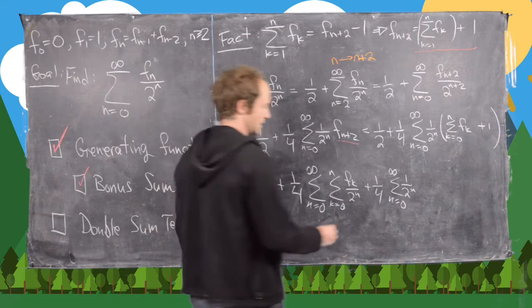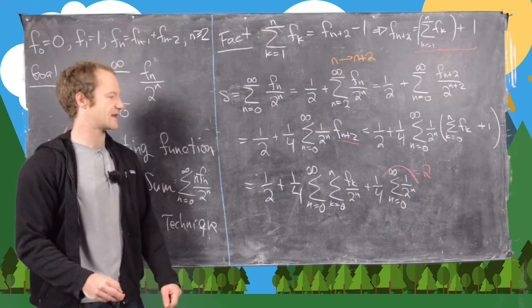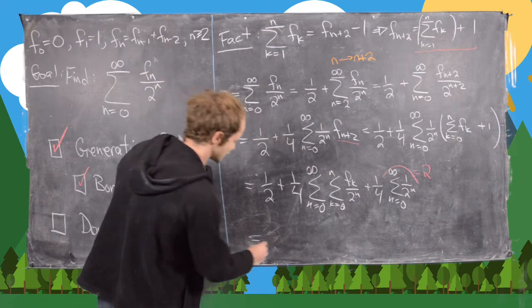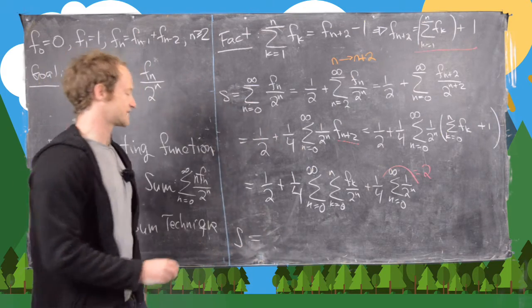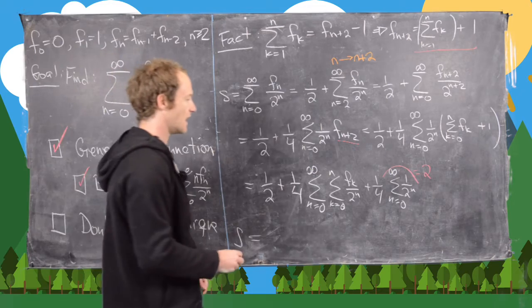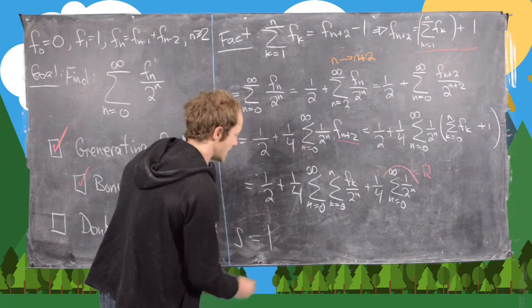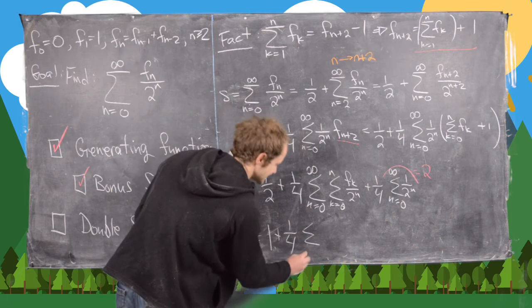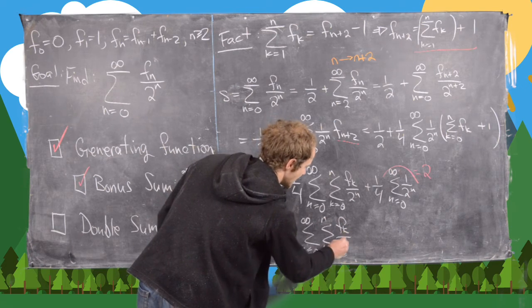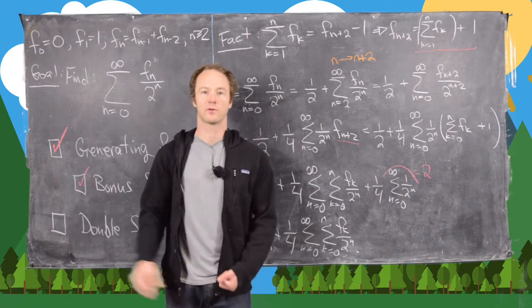So S = 1 + (1/4) times the double sum from n=0 to ∞, k=0 to n, of f_k / 2^n. Now we change the order of summation.